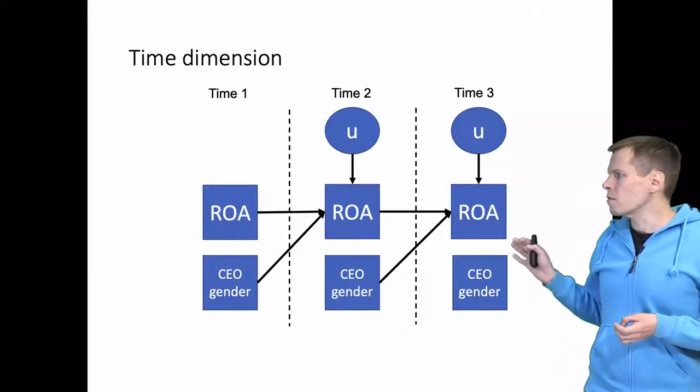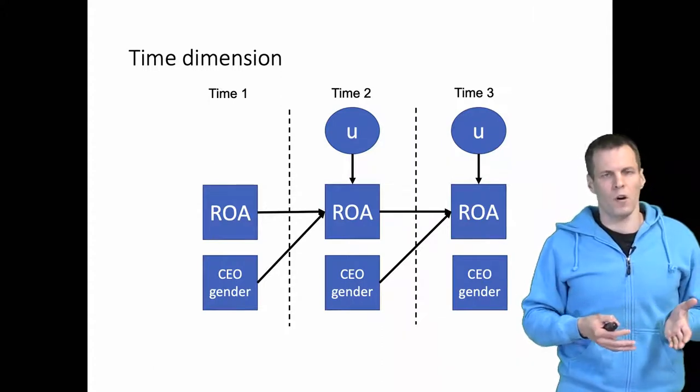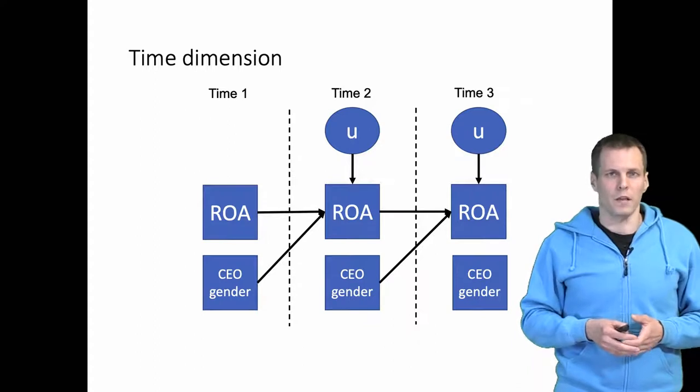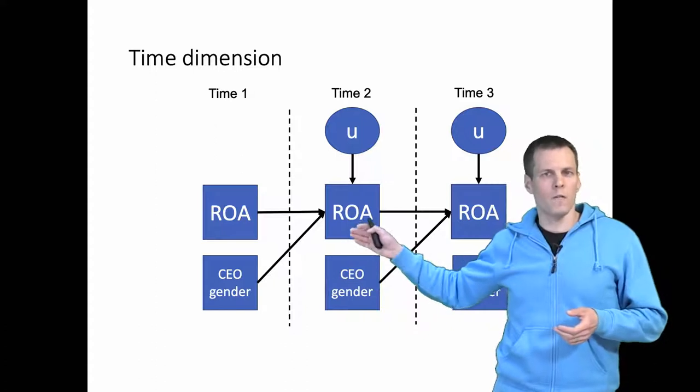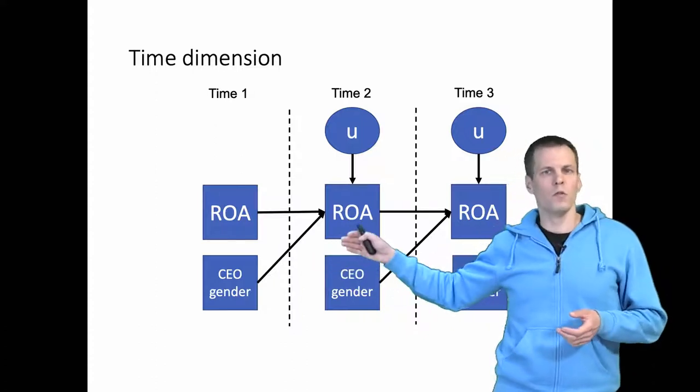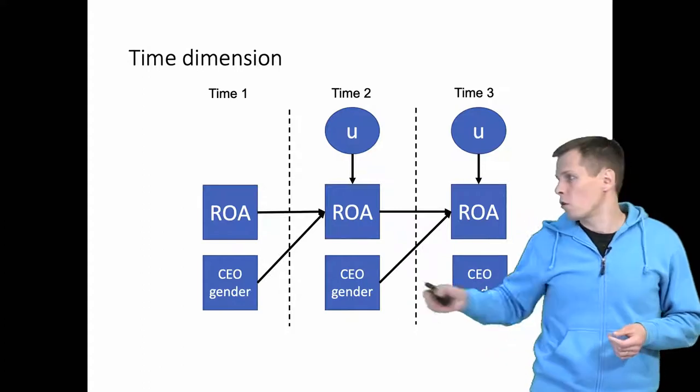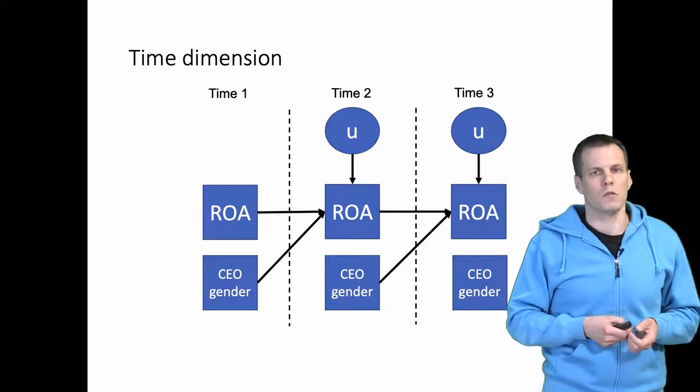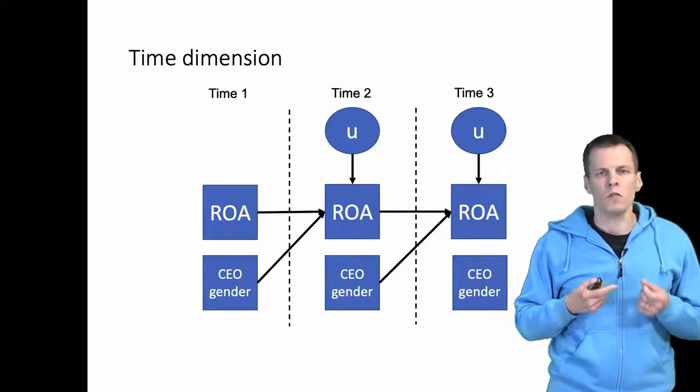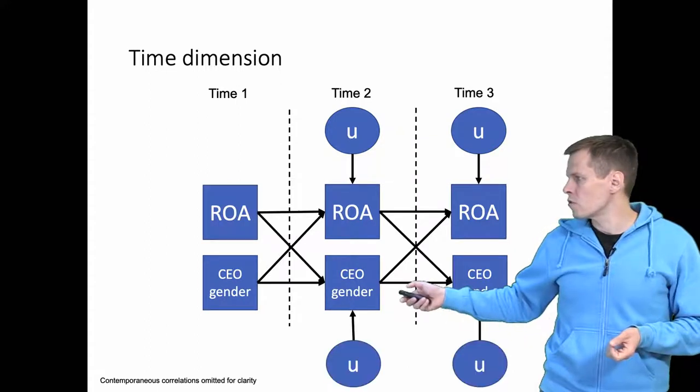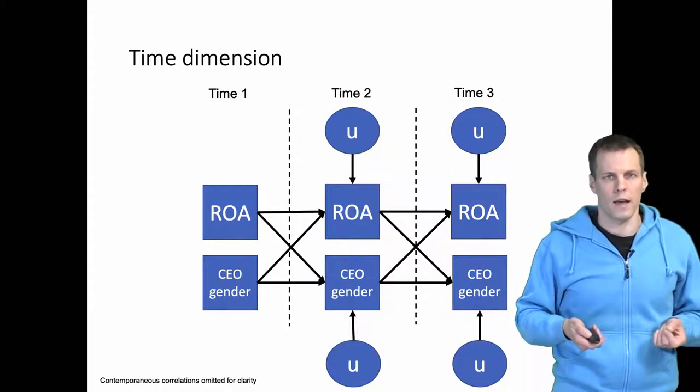If we are interested in estimating the effects of CEO gender on ROA, we typically would collect data over time and then check the effects of CEO gender on ROA from time one to time two, controlling for past ROA. This would give us the effect of CEO gender on ROA under certain assumptions. However, this data set will also allow us to check if there's reverse causality.